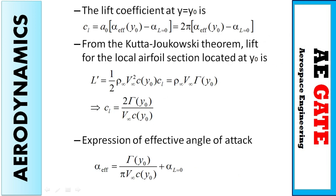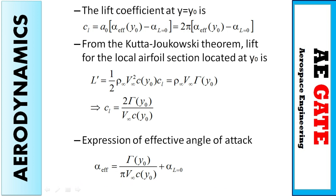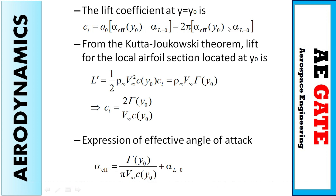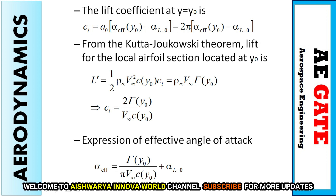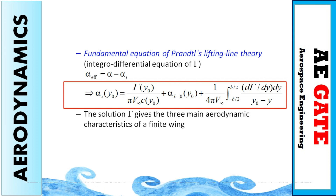Accordingly, the lift coefficient is C_l = a_0 * alpha = 2*pi*alpha. Here alpha is the effective angle of attack: alpha_effective + alpha_L=0, but since the induced component is negative, we can rewrite the equation. This gives the integral form of the fundamental equation of Prandtl's lifting line theory, whose solution provides three aerodynamic parameters for a finite wing.